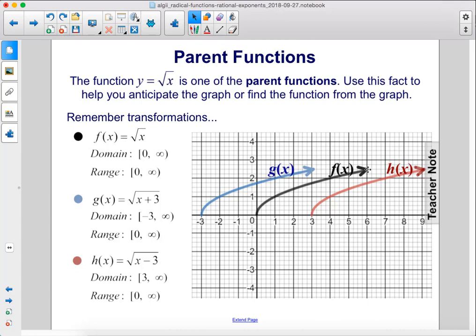We have our parent function here, f of x equals the square root of x. Here we have the square root of x plus 3, which moves the graph 3 units to the left. That's g of x here in blue. And then here we have x minus 3 under the radical, and that moves the graph to the right 3 units.